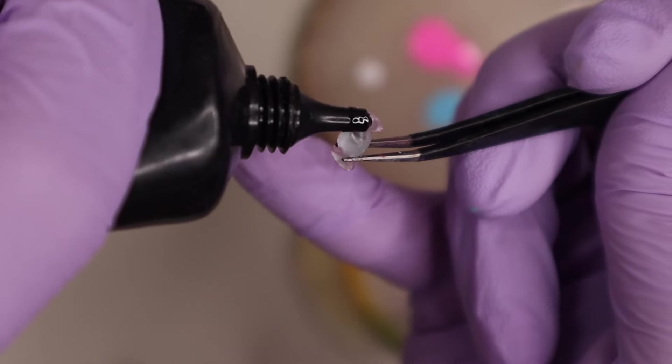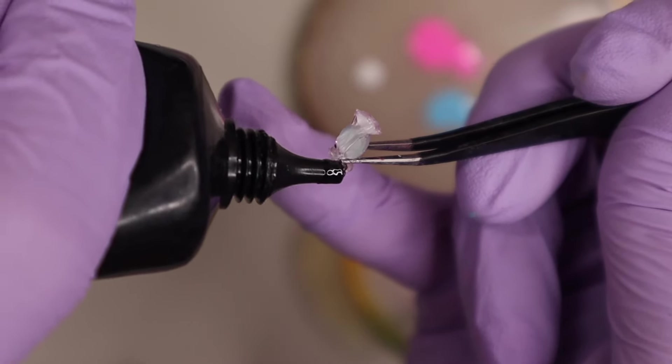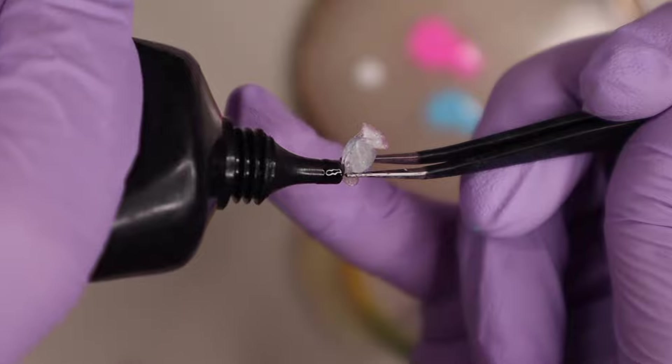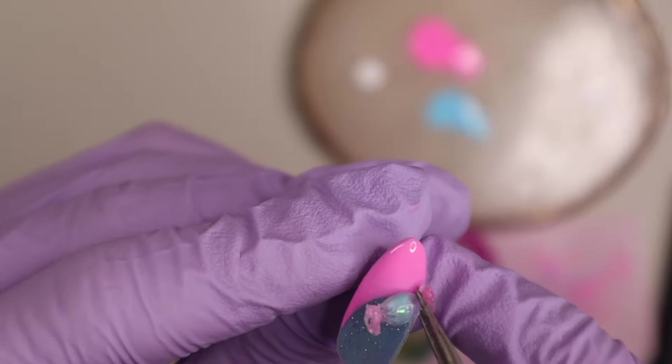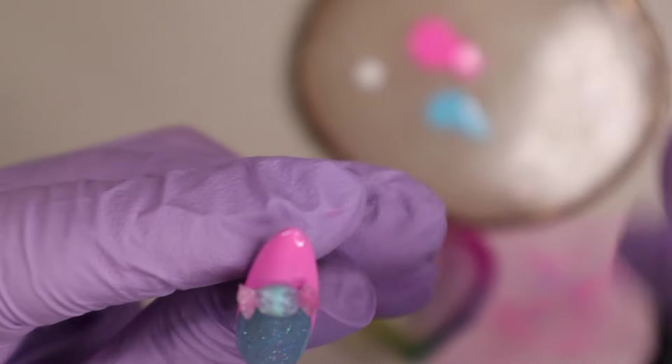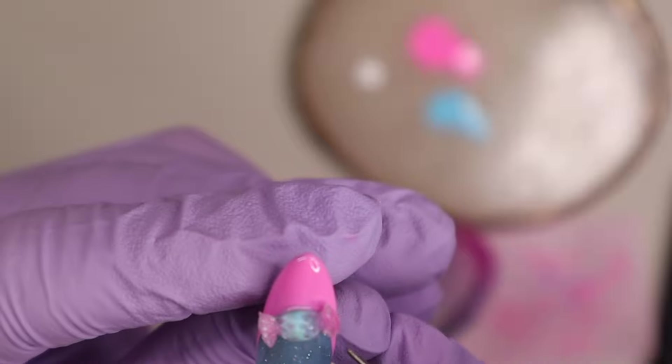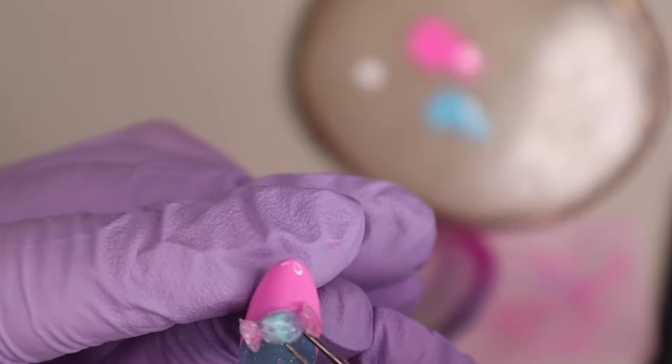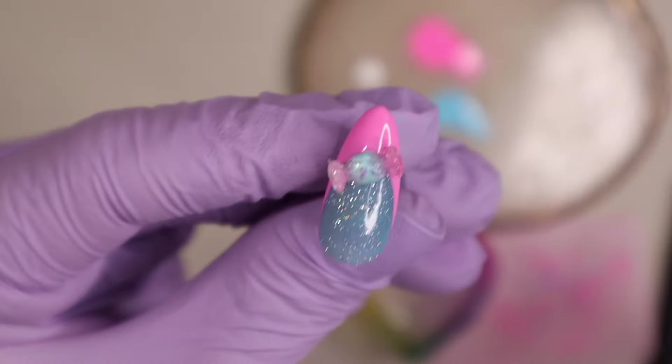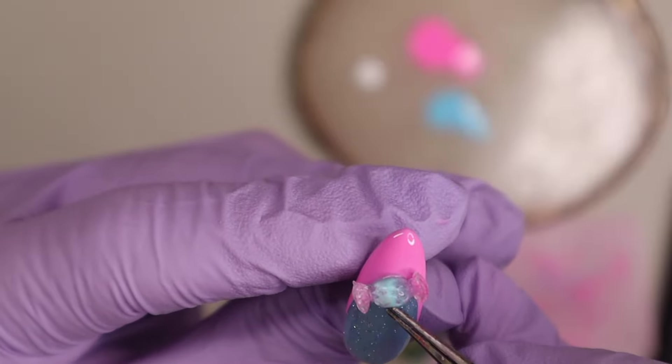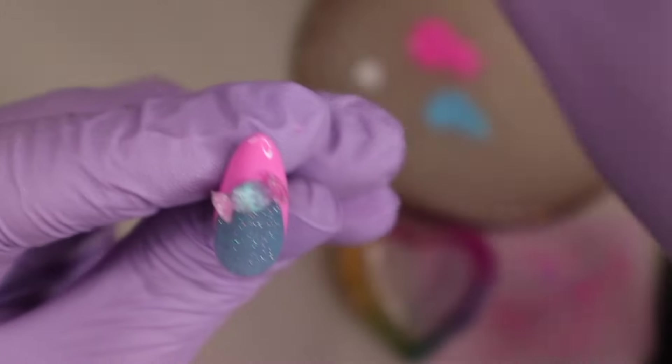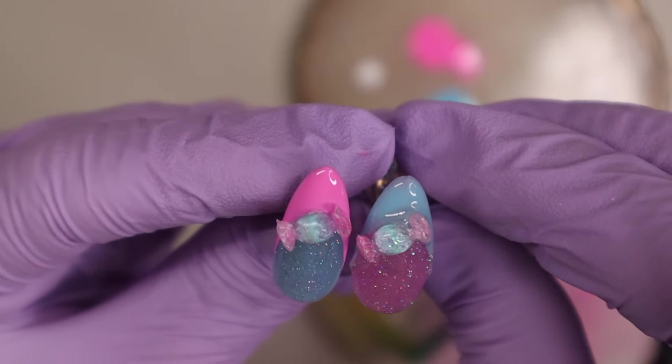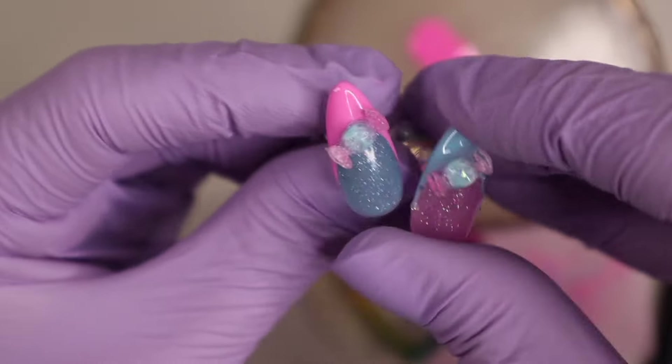I had these really cute sparkly candy charms in my collection and they happened to be pink and blue, so I thought that this was the perfect set to use them on. I'm just placing these charms on an angle and opposite of each other. This nail is going to be upward and to the right and then the next nail is going to be angled upward and to the left just to kind of break it up a bit. When I'm placing charms like this, I like to match it up with the finished hand just to make sure that everything is at the same level.